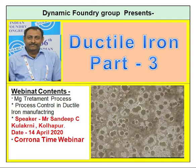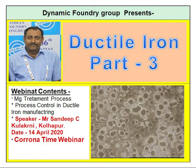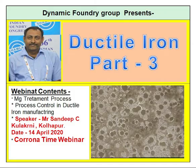Take a micro sample at the last box and a spectro sample at the last box — both are very important. Do not forget to take a spectro sample as well as a micro sample, because you have to confirm and release the heat based on these two reports. If the micro at the last box shows nodularity around 85% or above, you can release it. If it is less than 85%, you have to set it aside, verify the casting micro, soundness, and fracture, and only then release the heat.